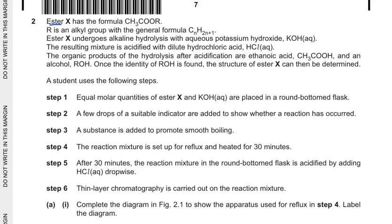Let's go ahead and here is question 2. It says, Ester X has the formula of CH3COOR. Now R is an alkyl group with the general formula CnH2n+1 and the ester X undergoes alkaline hydrolysis in aqueous potassium hydroxide. The resulting mixture is acidified with dilute hydrochloric acid HCl.